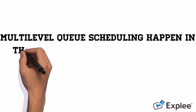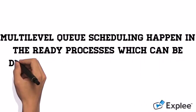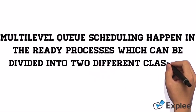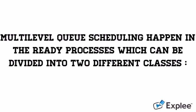Multi-level queue scheduling happens in the ready processes, which can be divided into two different classes.